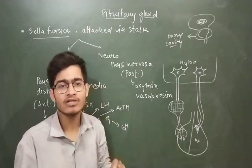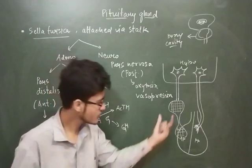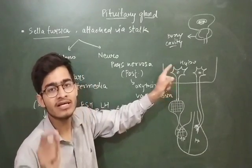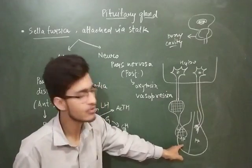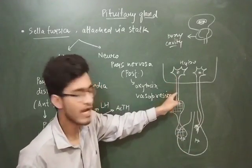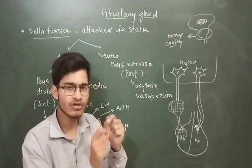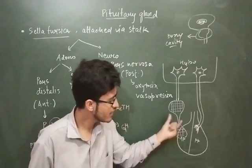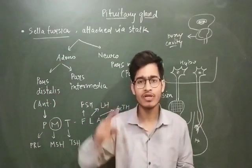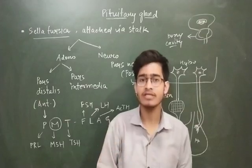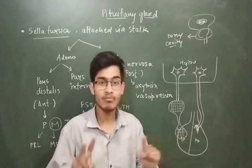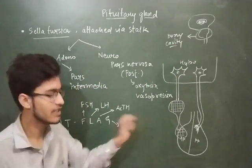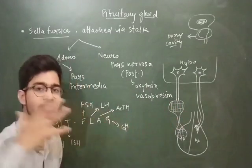The anterior pituitary is also connected to the hypothalamus but via a portal system — a bunch of vessels that connects the hypothalamus's secretory neurons to the anterior pituitary. The hormone is released into blood axonally and carried via this portal system to the anterior pituitary. The posterior pituitary, on the other hand, has a direct connection via the neurosecretory cells of the hypothalamus.